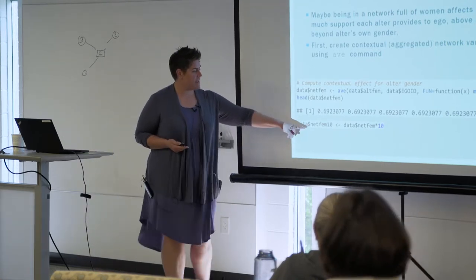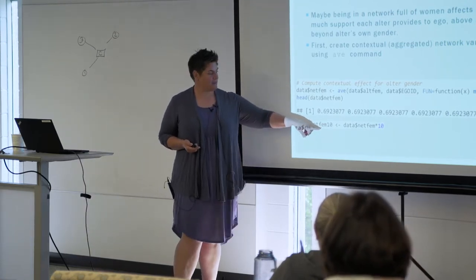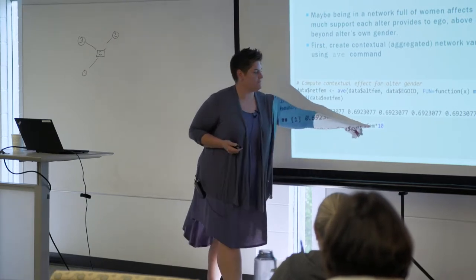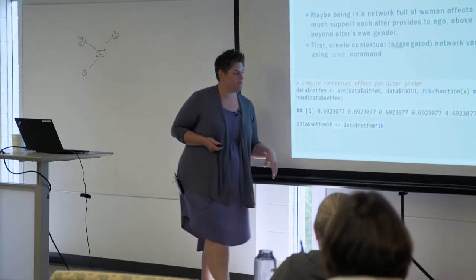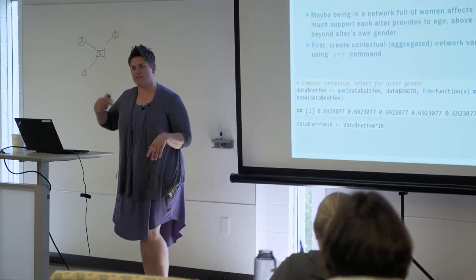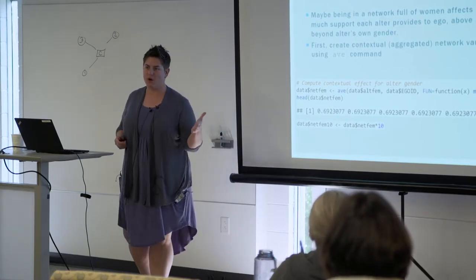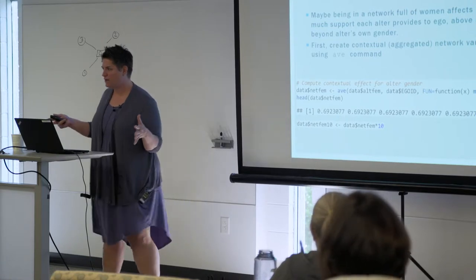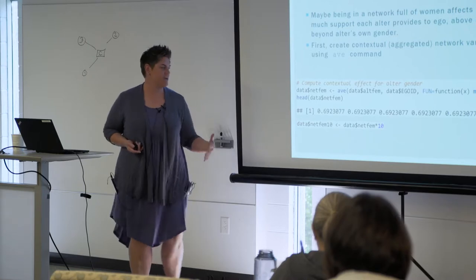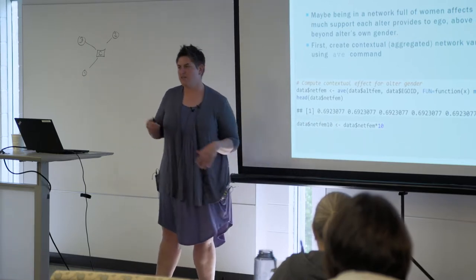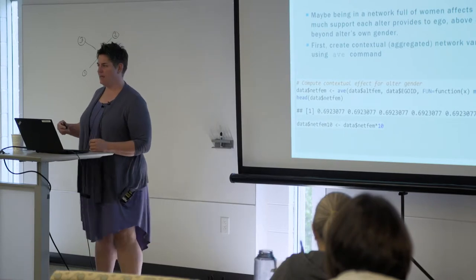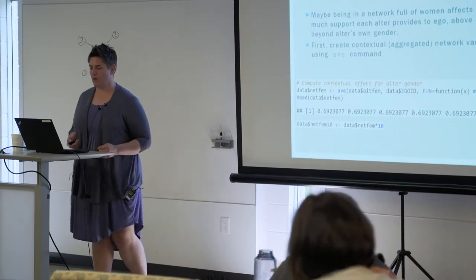I'm going to change the form of the variable, because if I don't, a one-unit change goes from zero to one, meaning from no women to all women in your network. The coefficient would look really big and the interpretation would be weird. So I'm changing it so that a one-unit effect is a 10% increase in the proportion of women in the network.